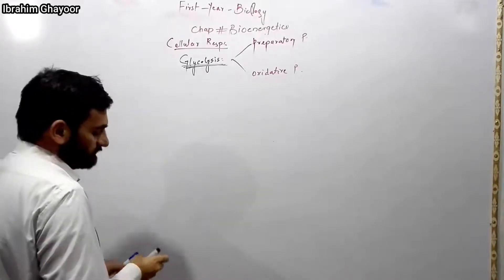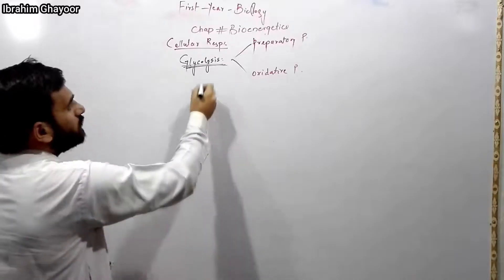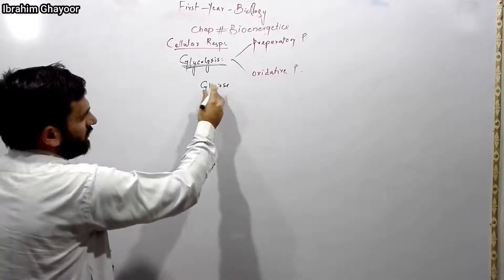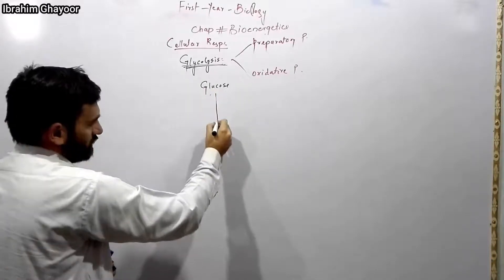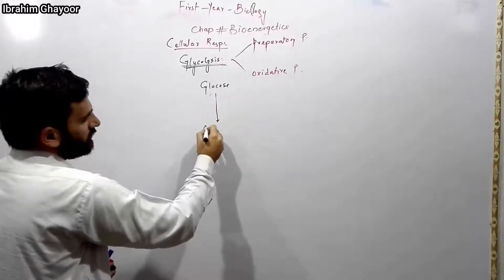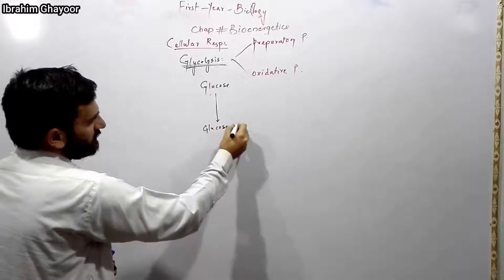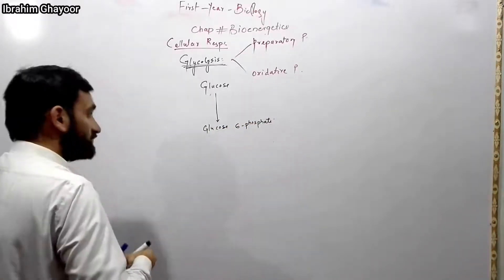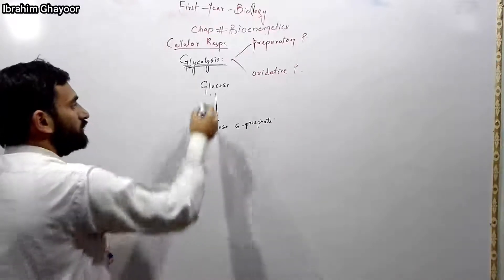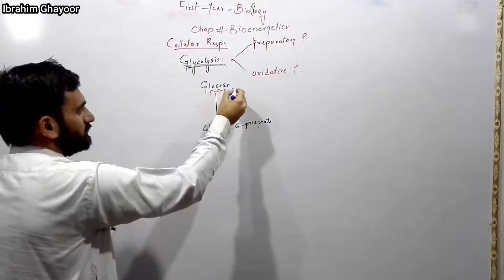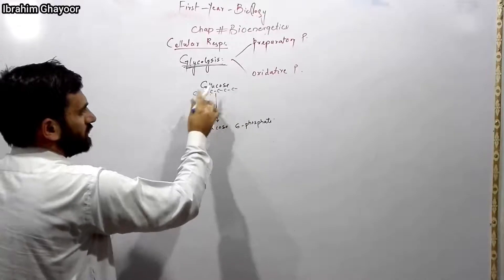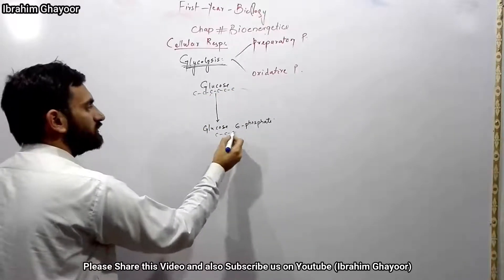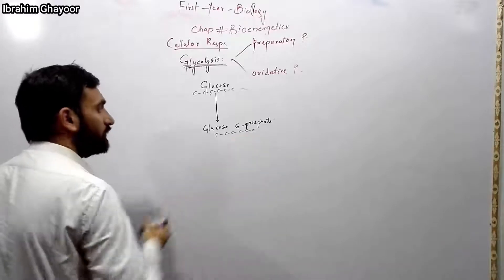Glucose goes through the first step. Glucose is converted into glucose-6-phosphate. A phosphate group is attached to glucose in this reaction.